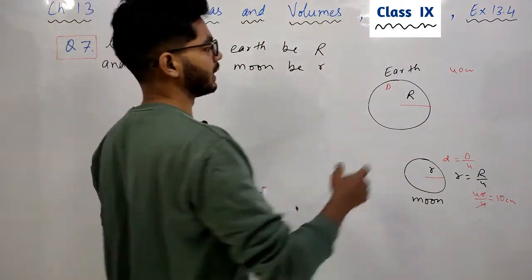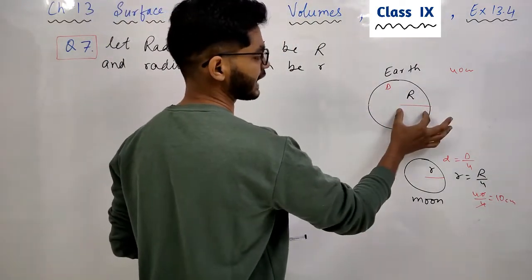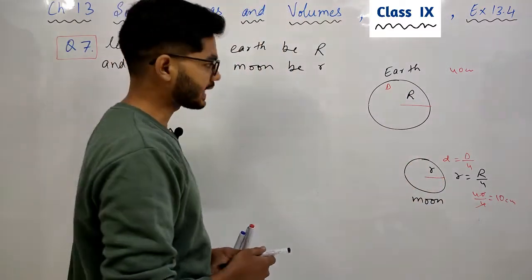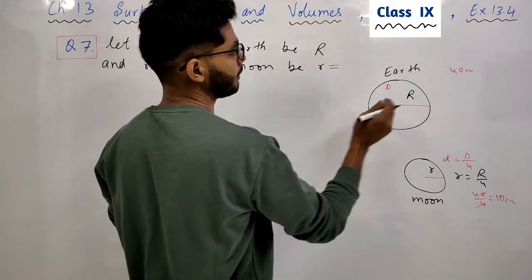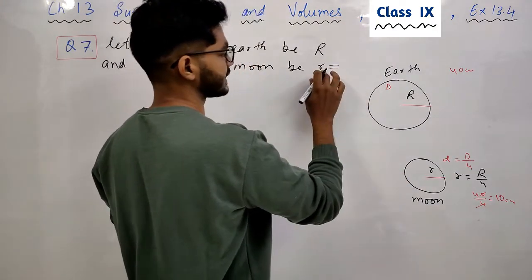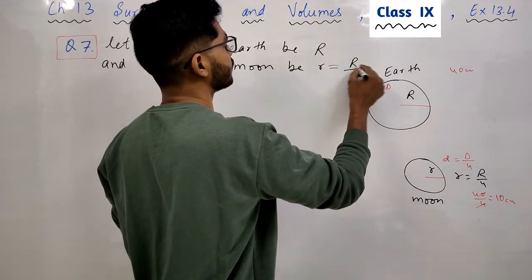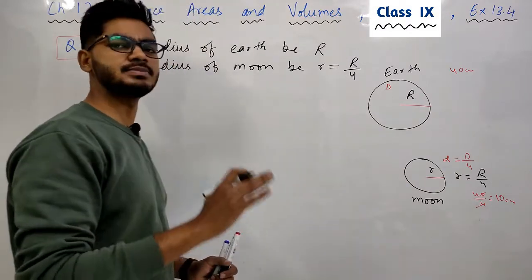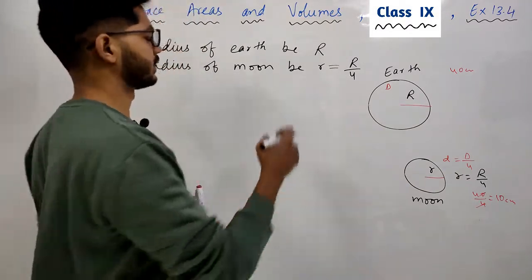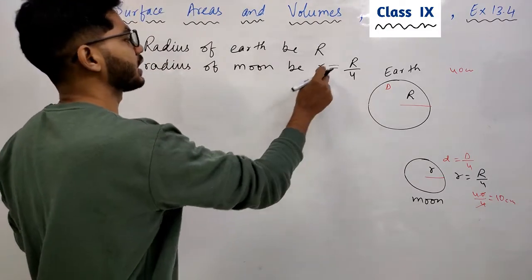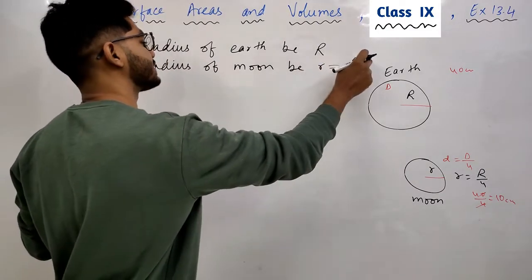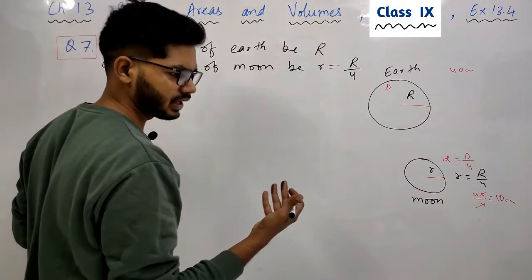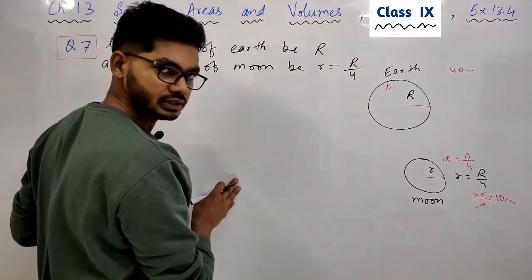ठीक है? तो अगर earth की radius capital R है और moon की radius small r है, तो question में बोला है कि moon की radius earth की radius का one-fourth है। उन्होंने diameter बोला है, मुझे पता है — लेकिन क्योंकि diameter one-fourth है तो radius भी one-fourth ही होगी। तो जहाँ भी जरूरत पड़े, small r की जगह capital R over 4 put कर दूँगा — जहाँ capital R radius of the earth है।